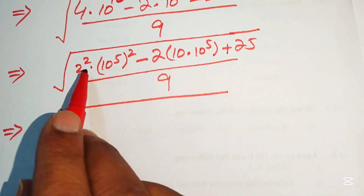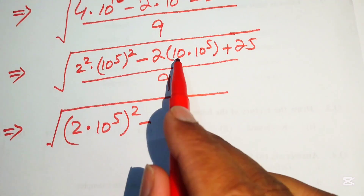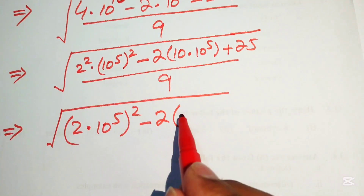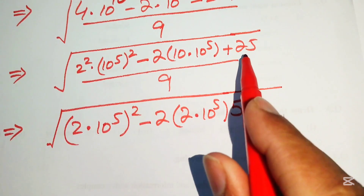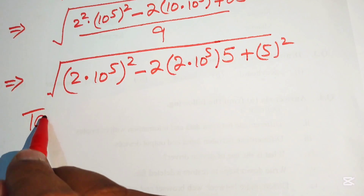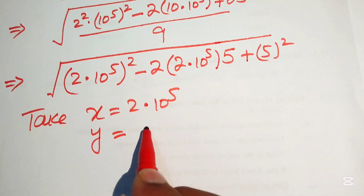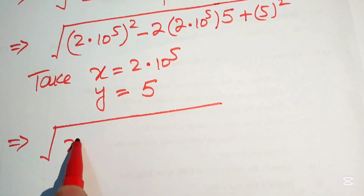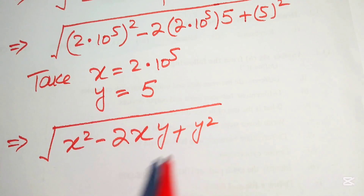Recognising the perfect square: let x = 2 × 10^5 and y = 5. Then the numerator becomes x² − 2xy + y², which is (x − y)². So the expression becomes square root of (x − y)² divided by 9.